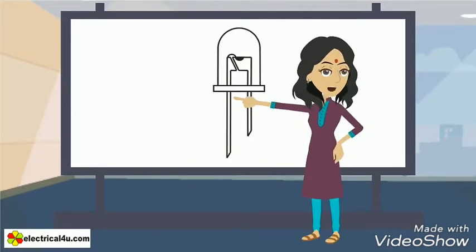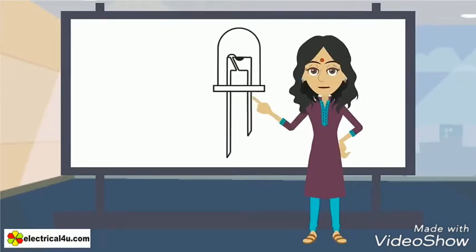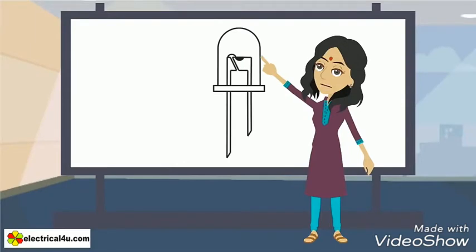This is anode or positive terminal. This is cathode or negative terminal. The PN junction is surrounded by a transparent, hard, plastic epoxy resin, hemispherical shaped shell to protect the diode from external shock. This is a transparent cover of the diode.